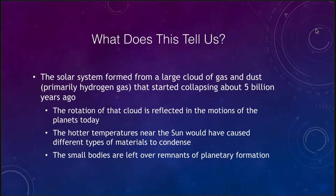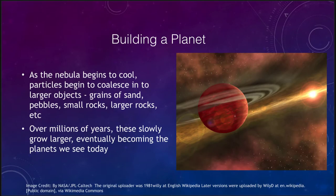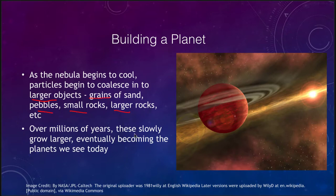Let's look at building a planet and what would have happened. The nebula would begin to cool; the hotter it is, the fewer objects are able to start forming solid particles. So the first things to form would have been metallic and rocky materials close to the star. The particles begin coalescing into larger objects, starting off with simple grains, then pebbles, smaller rocks, larger rocks, eventually becoming what we call planetesimals.